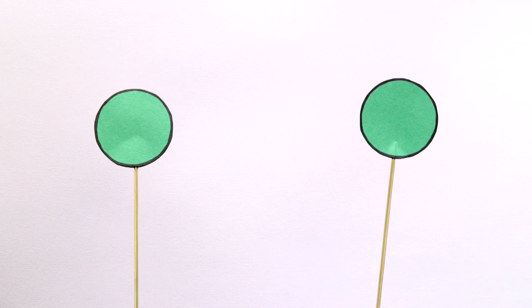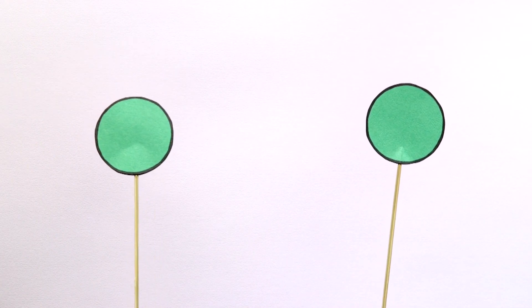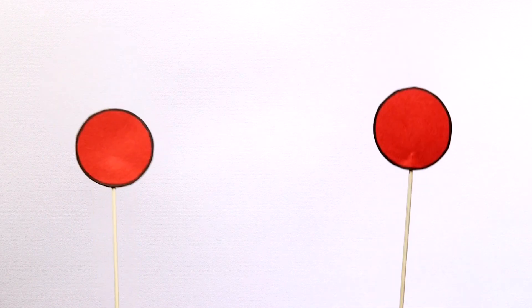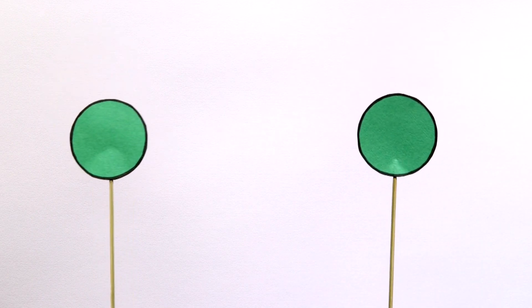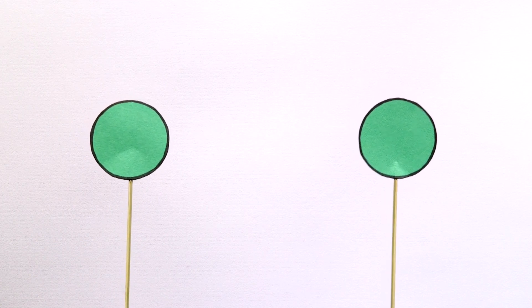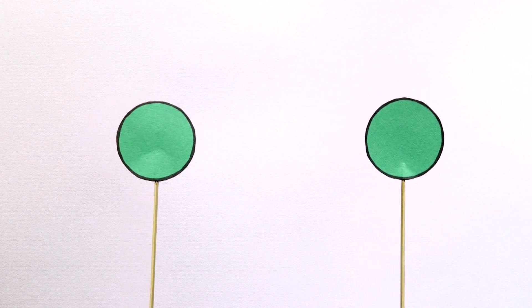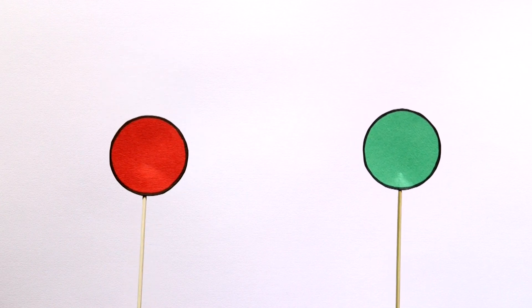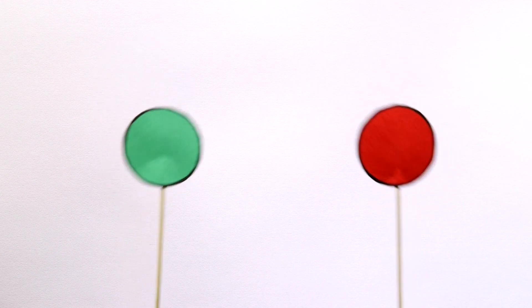The experiment is called a Bell test and usually involves two particles. Each particle can be in one of two states, here represented by red and green. But in the Bell test, the two particles are entangled, which means that when one particle is green, the other has to be red, and vice versa.